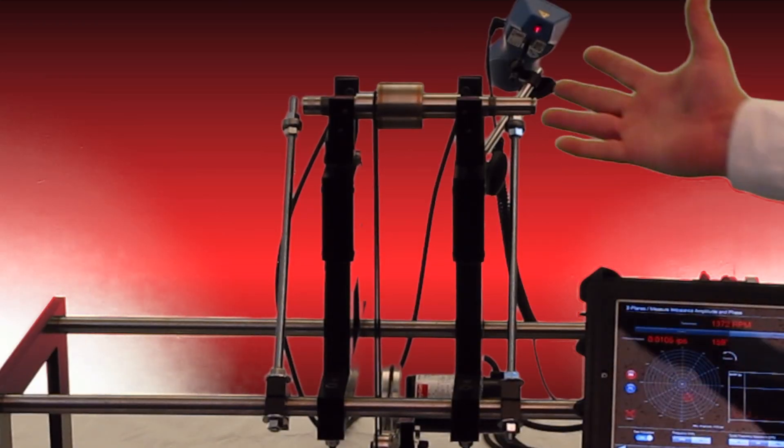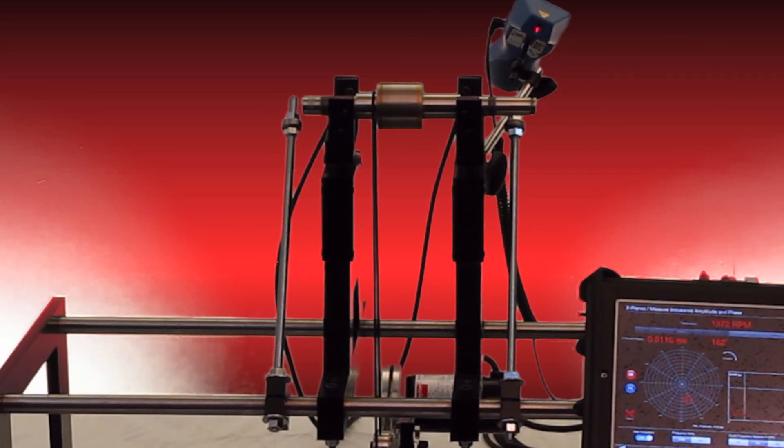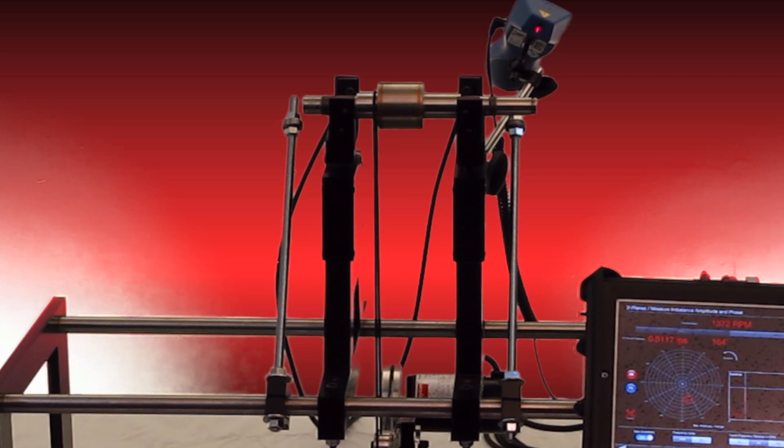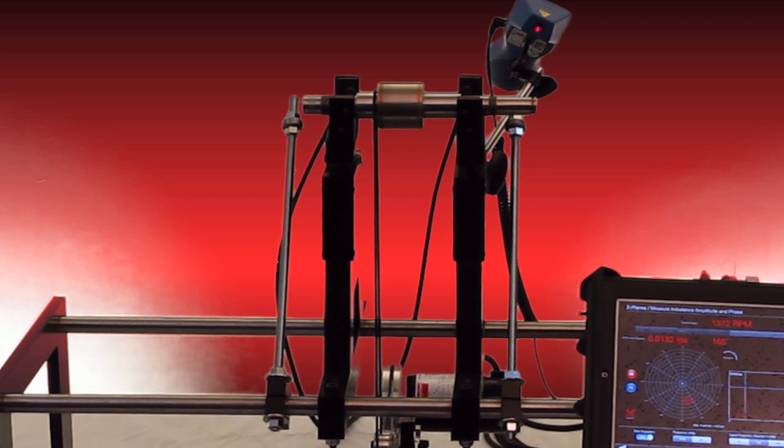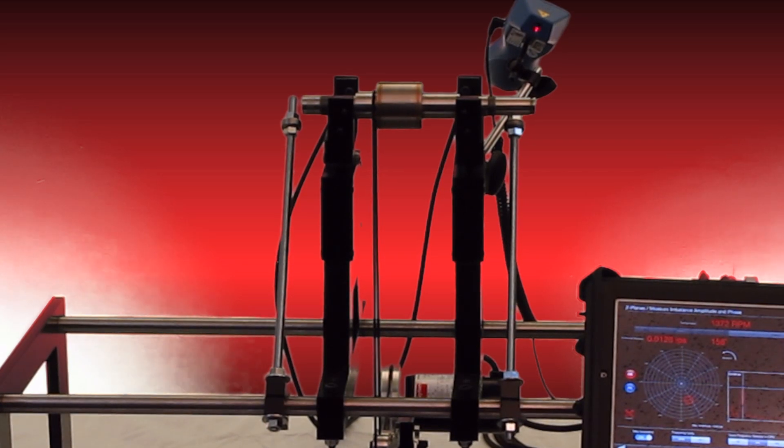This is a two-plane soft bearing balancing system controlled by a DC motor, so we can run very slow speeds and accurate speeds.